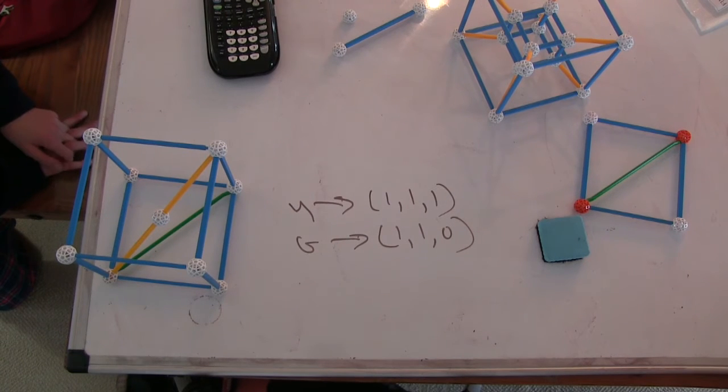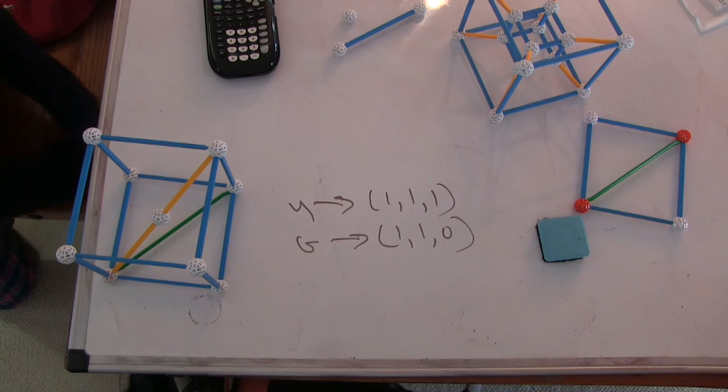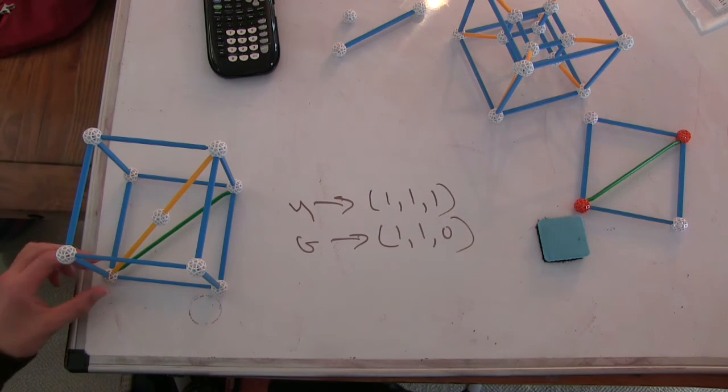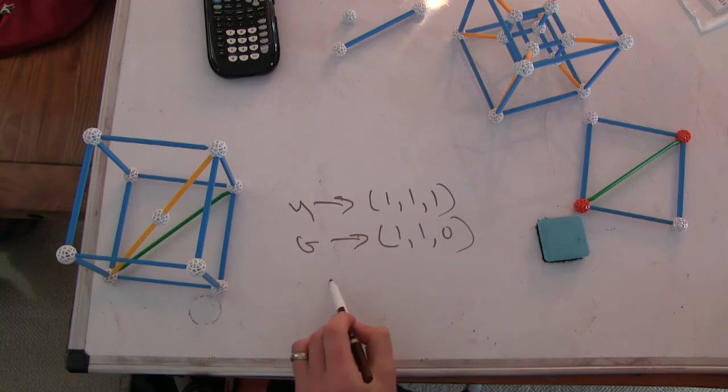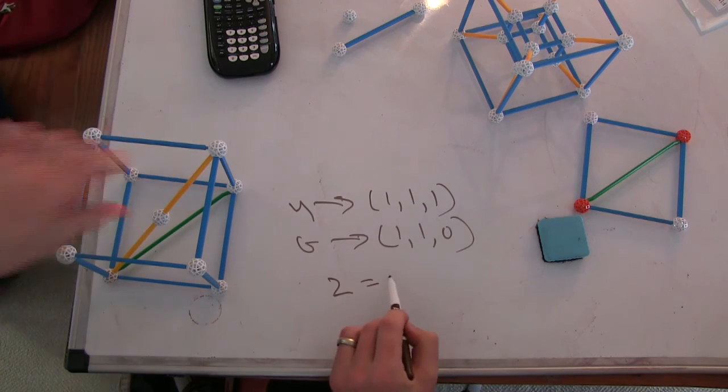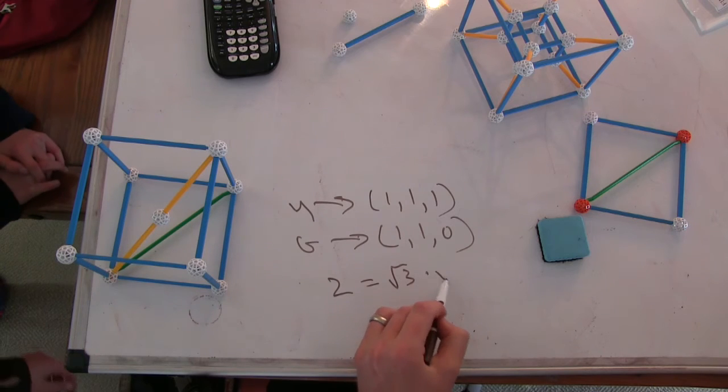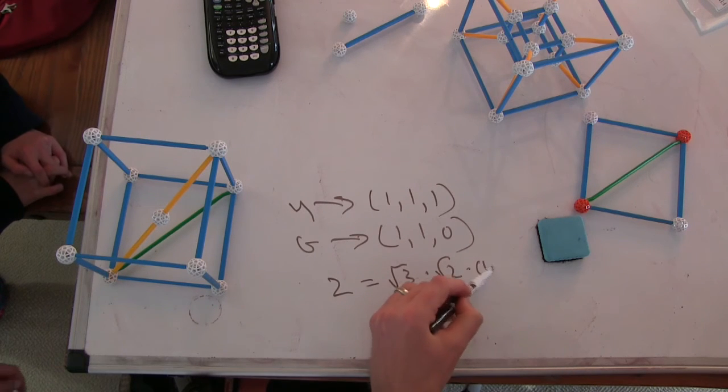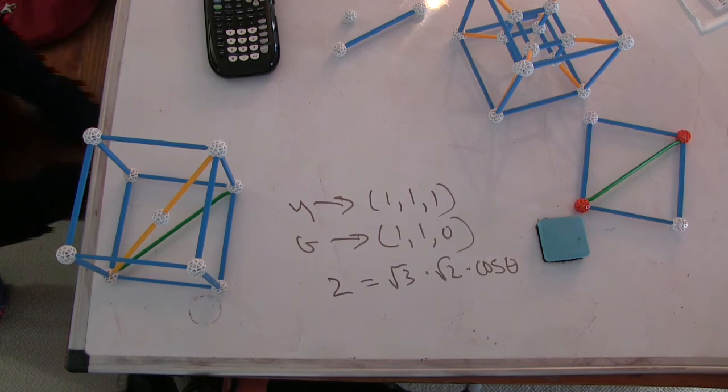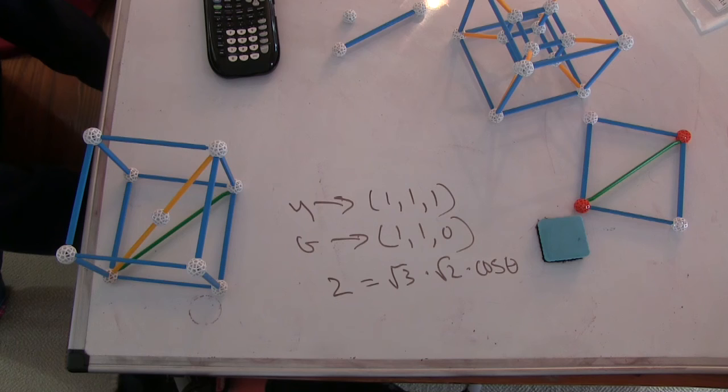Okay. So the dot product here is two equals magnitude - so this is root three times root two times cosine theta. So we could solve for that as well. It's kind of complicated and it doesn't really need to be that complicated because you could solve for cosine in a different way if you wanted, but it also works. This should, hopefully it should work.